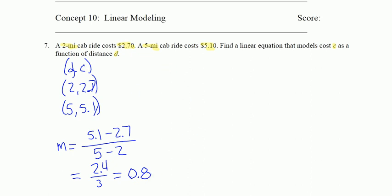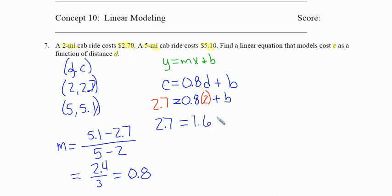So I know my equation, which is in the form of y equals mx plus b. I'm not going to use y and x here because I was given variables c and d. c has to equal some slope, which in this case is 0.8, times the distance d, plus some y-intercept b, which I haven't found yet. I'm going to use the 2 comma 2.7 point to find that. So 2.7 equals 0.8 times 2, plus b. 2.7 equals 1.6 plus b. Subtract 1.6 from both sides, that gives me 1.1.